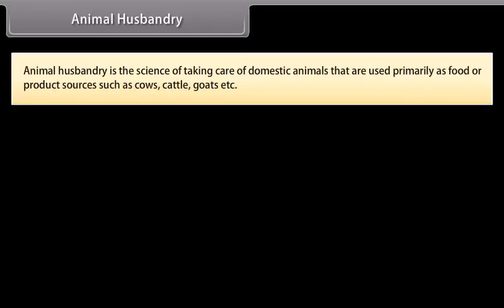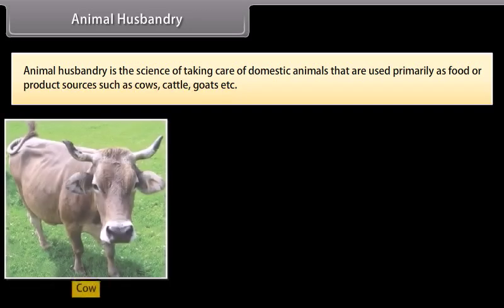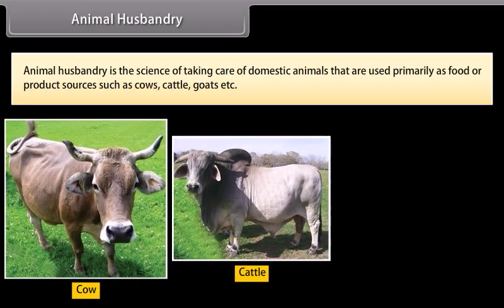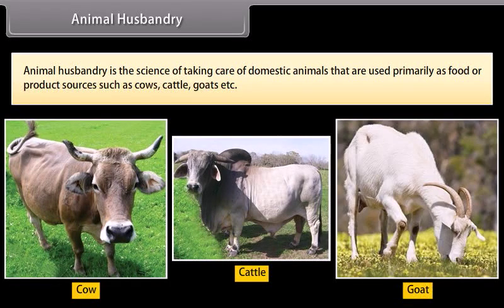Animal husbandry is the science of taking care of domestic animals that are used primarily as food or product sources, such as cows, cattle, goats, etc.